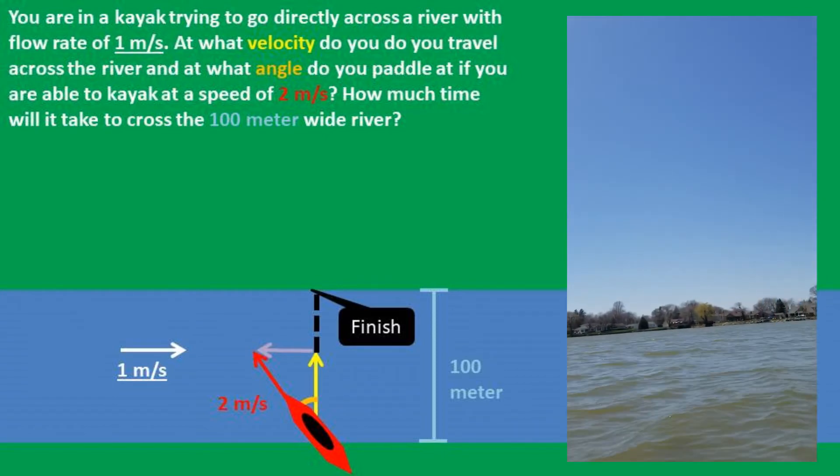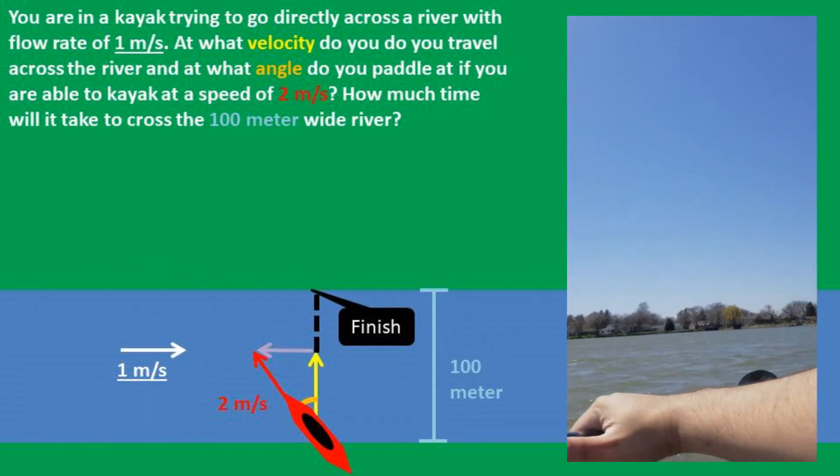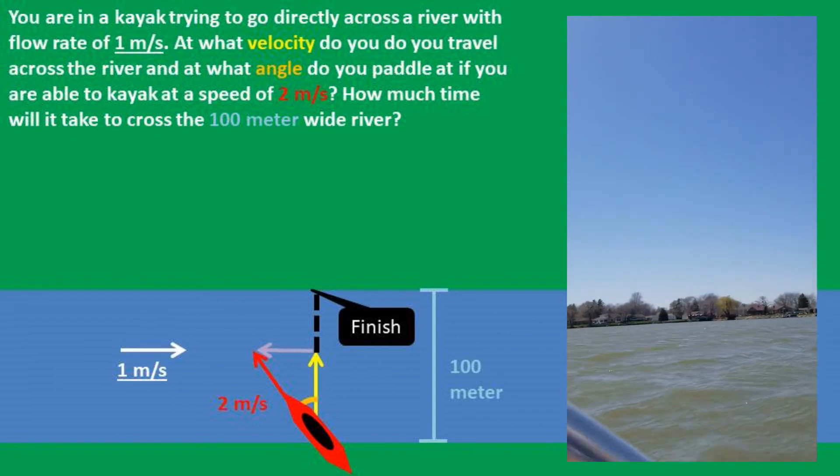At what velocity do you travel across the river and at what angle do you paddle at if you are able to kayak at a speed of 2 meters per second? And finally, how much time will it take to cross the 100 meter wide river?